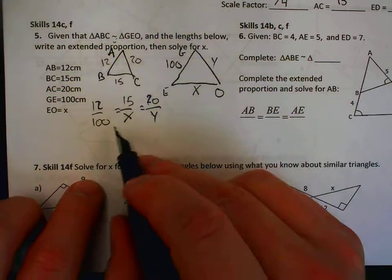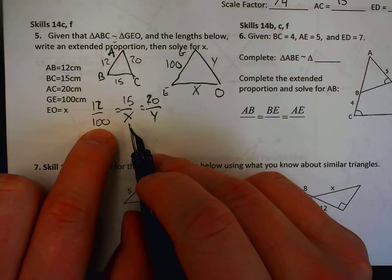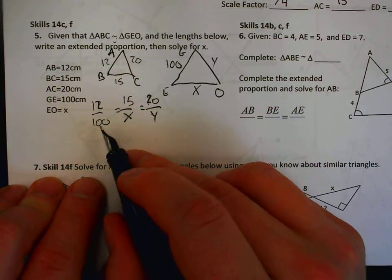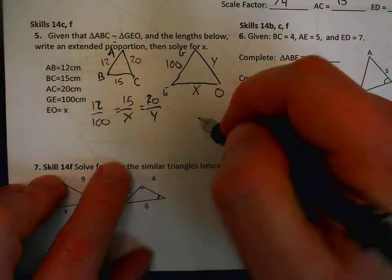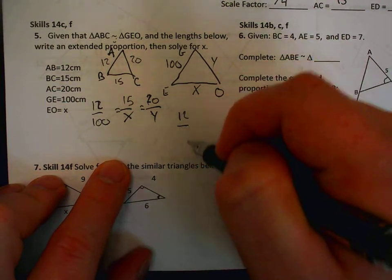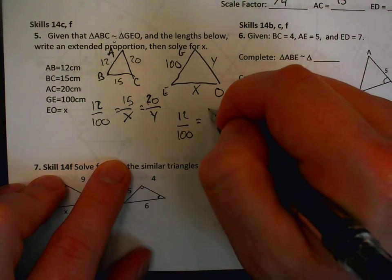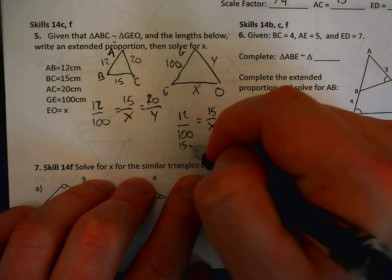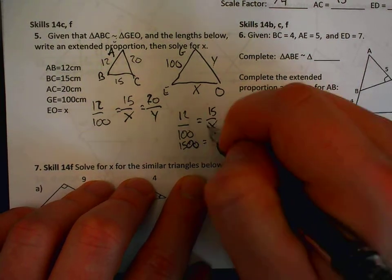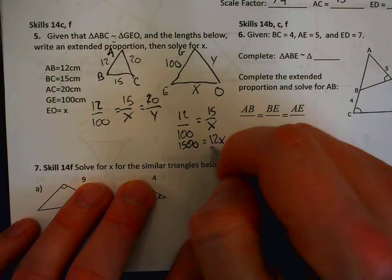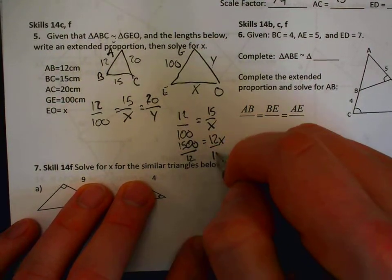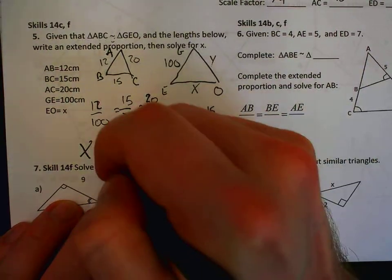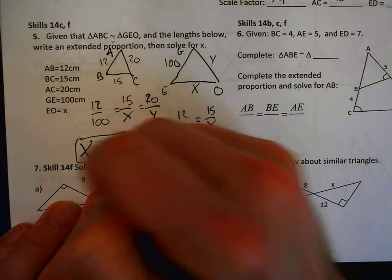To solve this thing, I need to pick out two of these fractions and set them in a proportion. The two obvious choices are 12 over 100 and 15 over x, because I actually know all the values here, and that leaves me with one variable. Cross multiply. 100 times 15 would be 1,500. 12 times x is 12x. And then divide by 12, which gives me my final answer of x equals 1,500 divided by 12, which is 125.